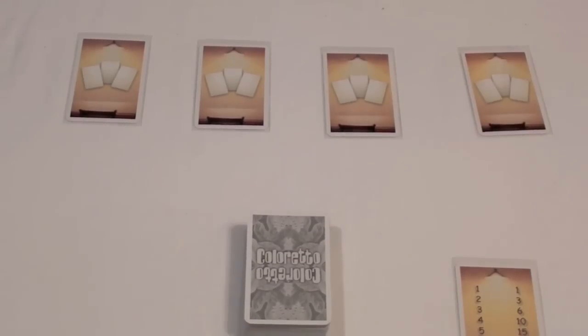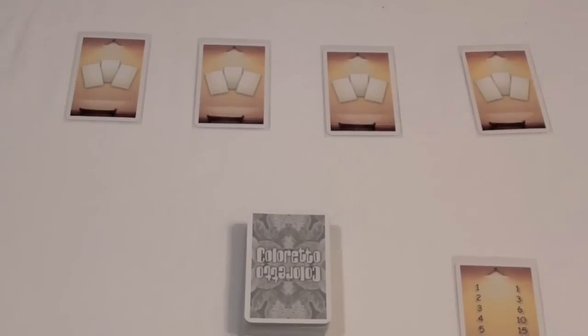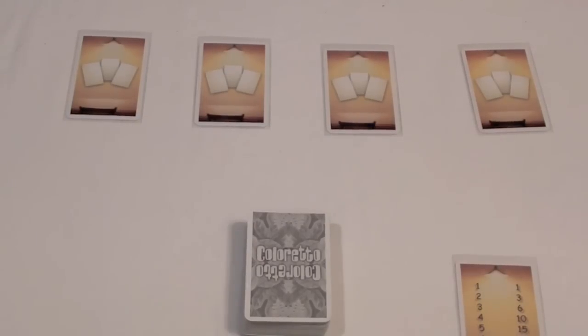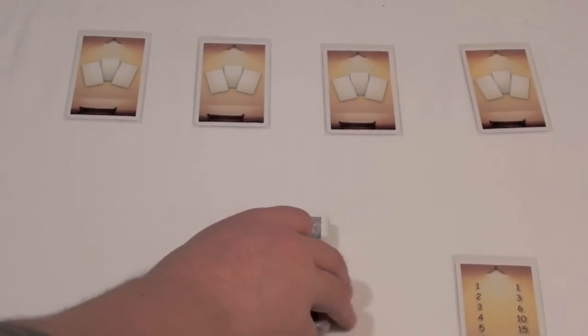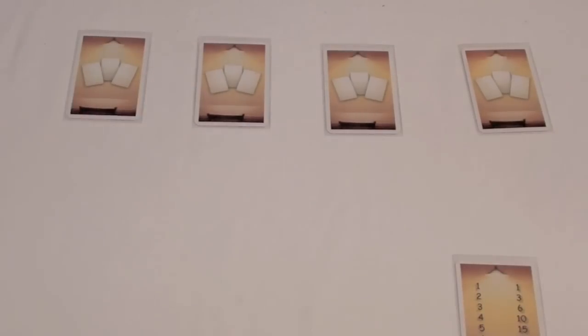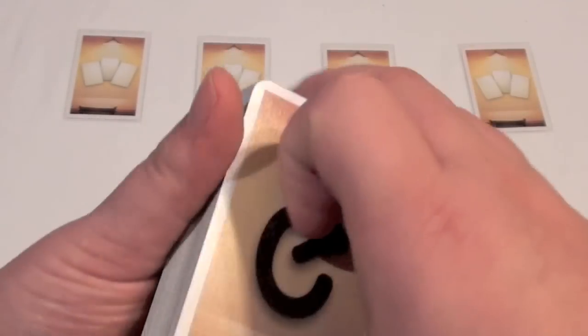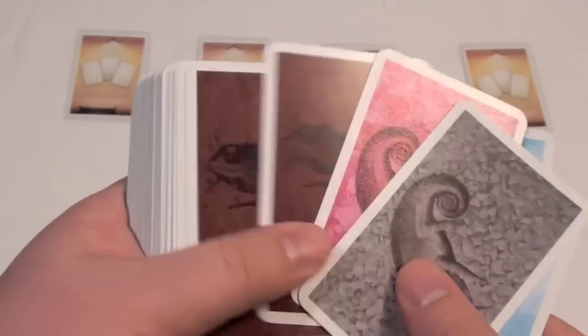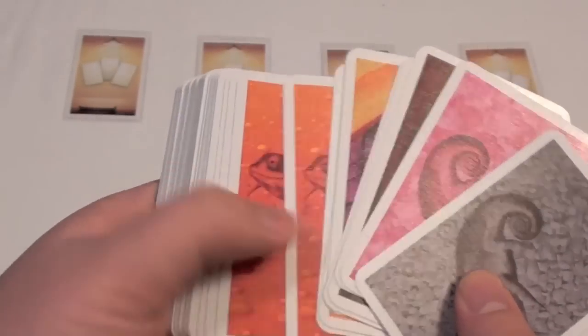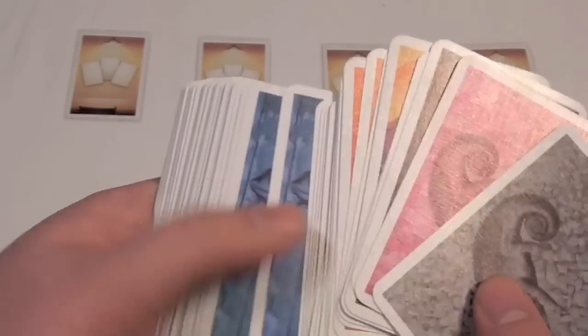Here you see the initial setup for a four-player game of Coloretto, indicated by these four placeholder cards in the center. The game includes placeholder cards and a deck with several different colored cards - there are seven suits, so seven different colors.